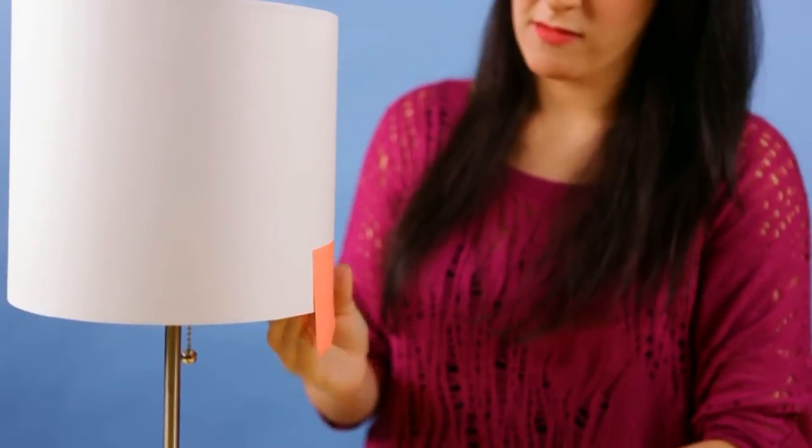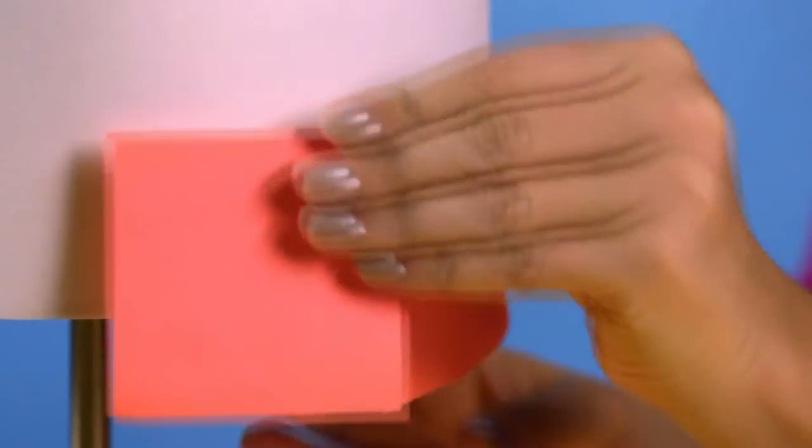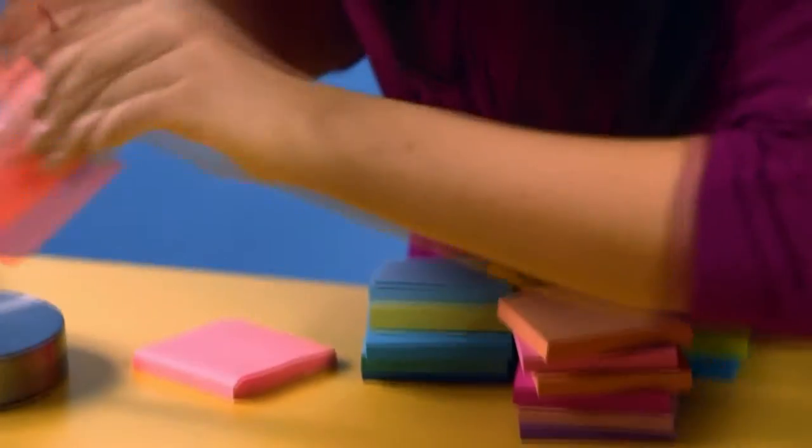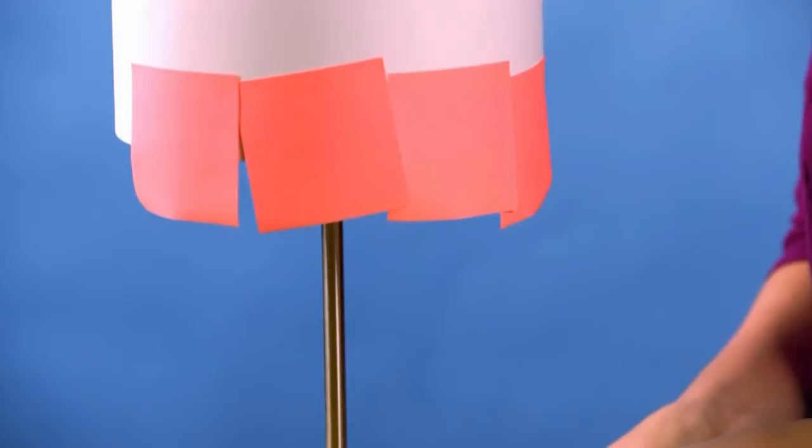Starting at the bottom of the lampshade, begin sticking down a row of the same color sticky note around the entire base of the shade. If the notes are having trouble sticking, reinforce them with a piece of double-sided tape or try coating your lampshade in a sheet of computer paper.